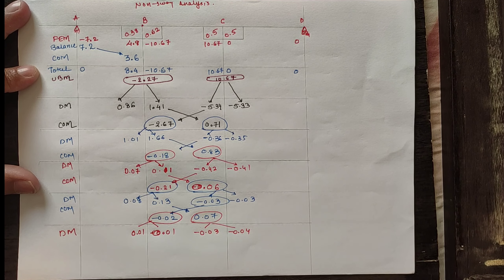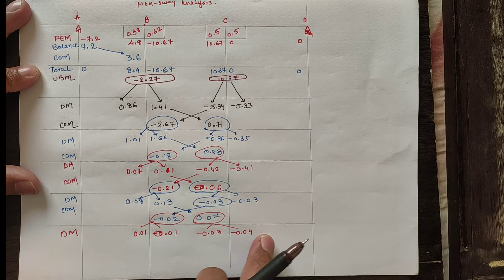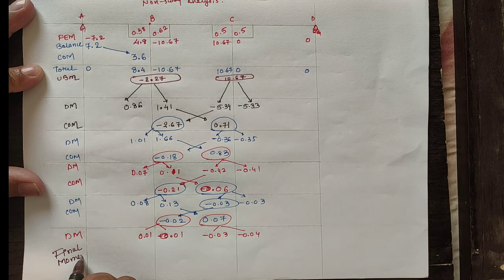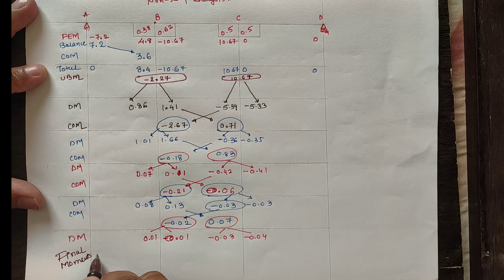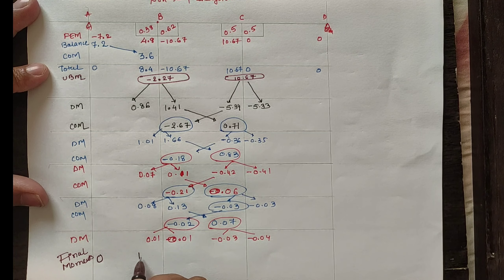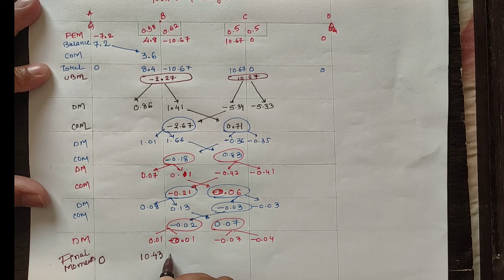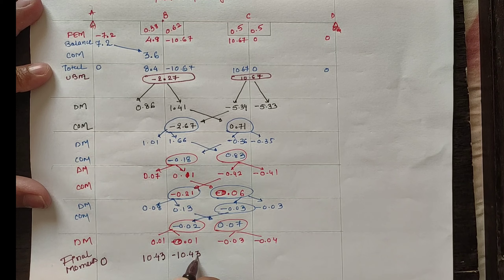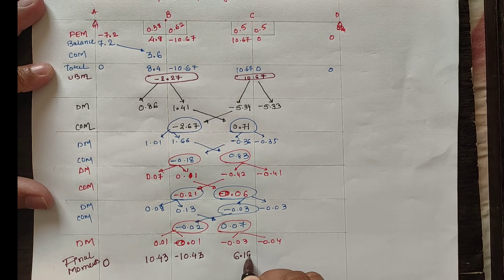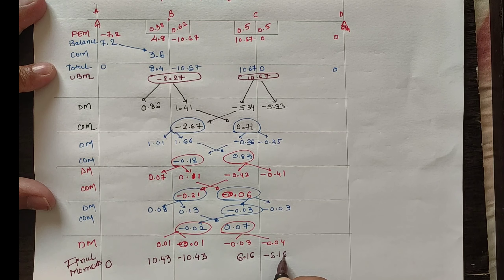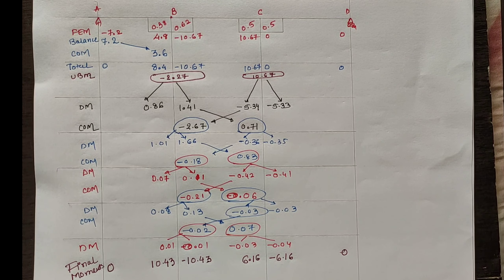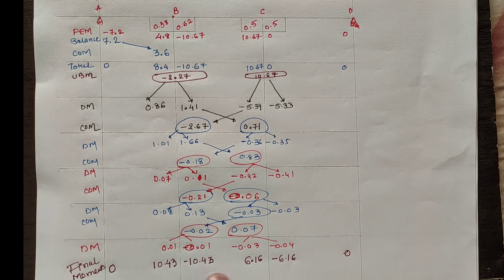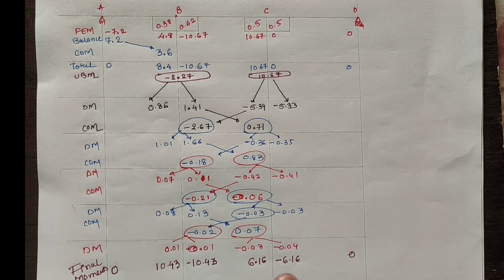At each joint our value is very near to 0.1, and we now calculate the final moments using algebraic summation of each column. We will have the values as: MAB = 0, MBA = 10.43, MBC = minus 10.43, MCB = 6.16, MCD = minus 6.16, and MDC = 0. So using non-sway analysis from the fixed end moment, our final moments are as given in the tabular form.